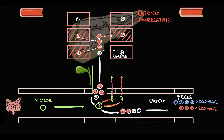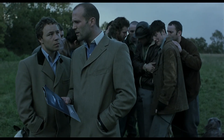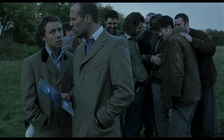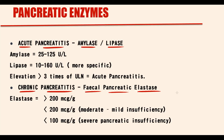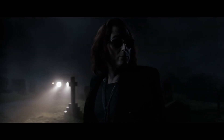In severe chronic pancreatitis, the number of alive acinar cells becomes very low. With decreasing acinar cells, elastase secretion decreases, protein digestion decreases, resulting in protein malabsorption and excretion of undigested proteins in the stool. In this case, an amount of elastase less than 100 micrograms per gram is a marker of severe exocrine pancreatic insufficiency. The lower the elastase in the stool, the fewer alive cells are present in pancreatic tissue, and the more severe the pancreatic insufficiency.